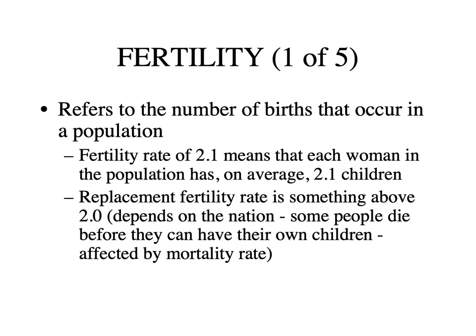Fertility refers to the number of births that occur in a population — specifically, the number of births per woman. A fertility rate of 2.1 means that each woman in the population has, on average, 2.1 children. Replacement fertility — the number of people who need to be born to completely replace our society — has to be something above 2.0, because women need two children to reproduce themselves and a partner, and some people die before or never have children.